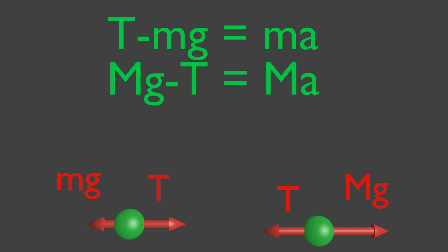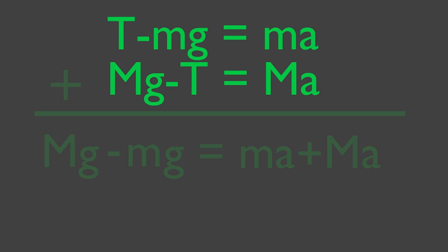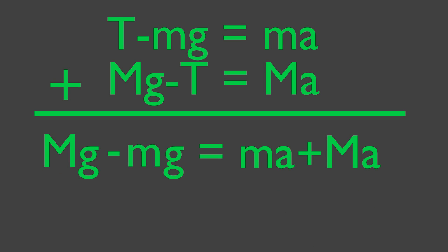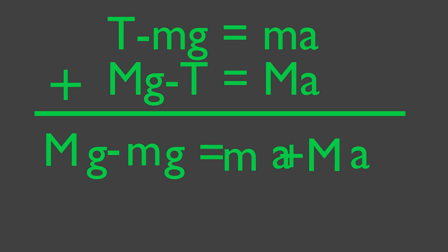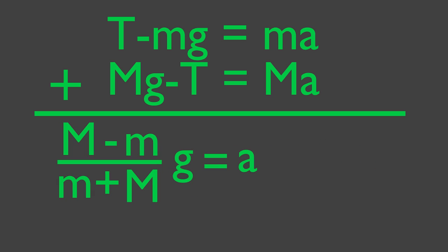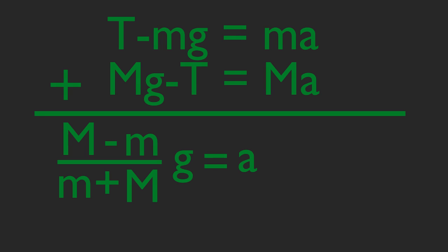Now we can solve these equations for the two unknowns. A, the acceleration, is easy — just add the equations and rearrange. You can solve for T if you want tension. Let's look at this equation for A. The top part is the difference in the masses and is also related to the net force. The bottom is the total mass in the system. How will A compare to G?